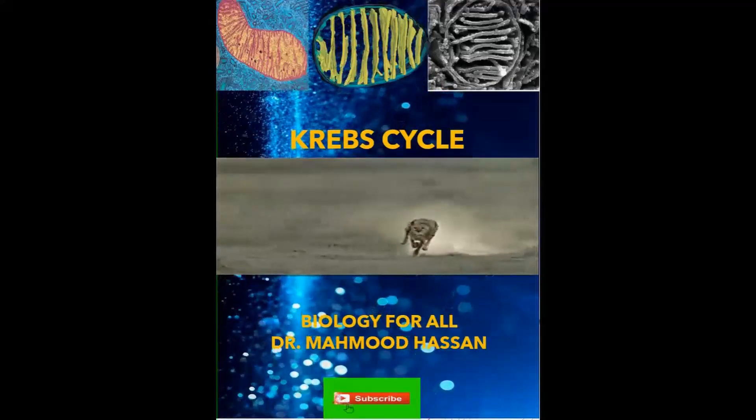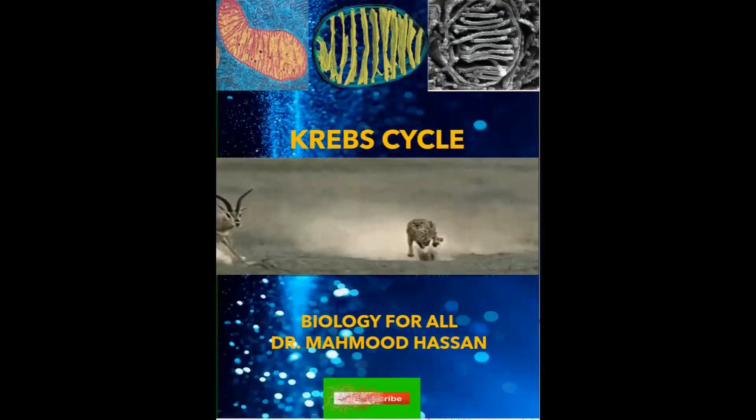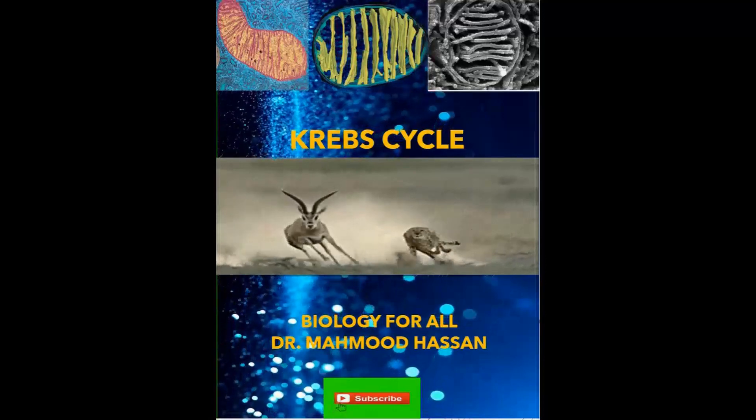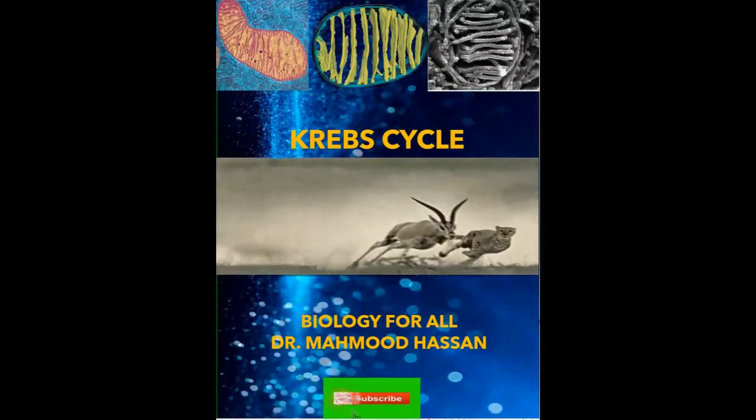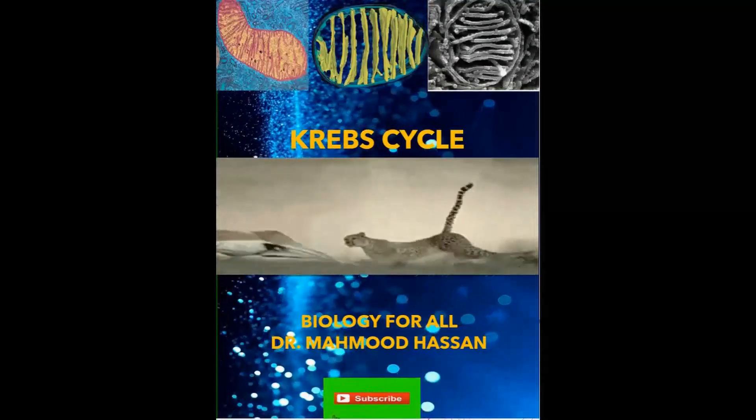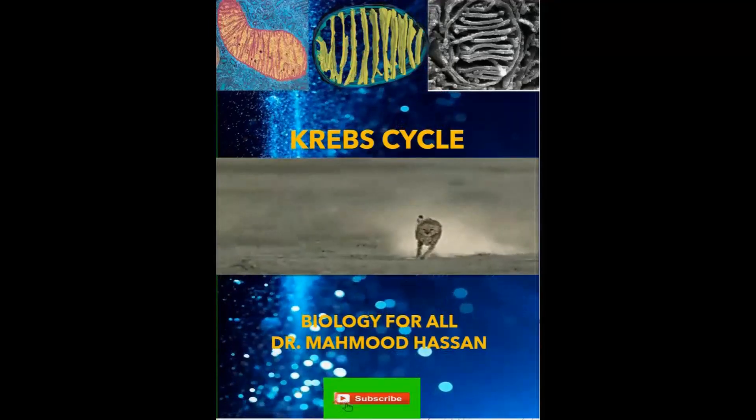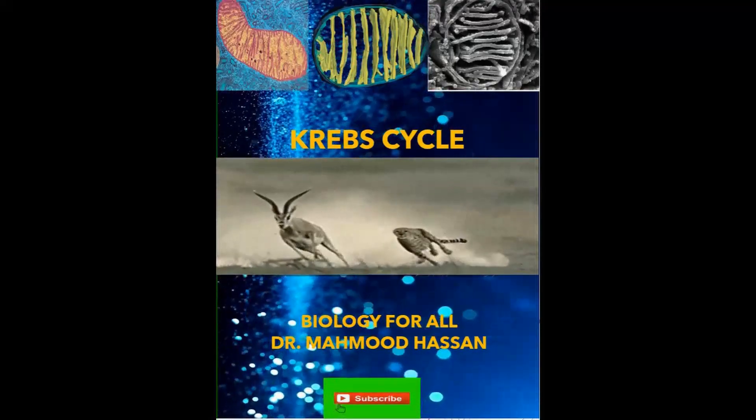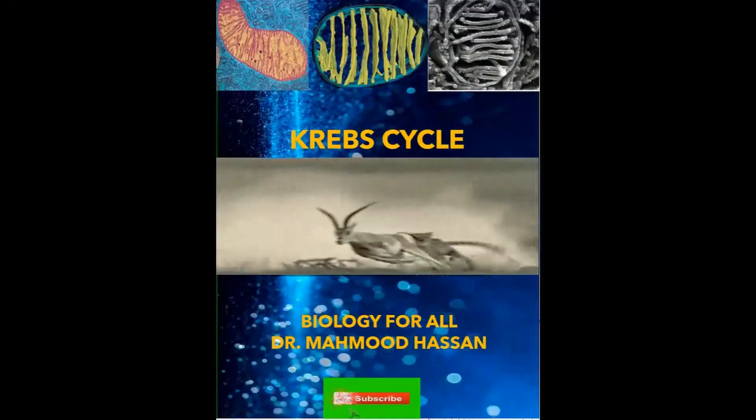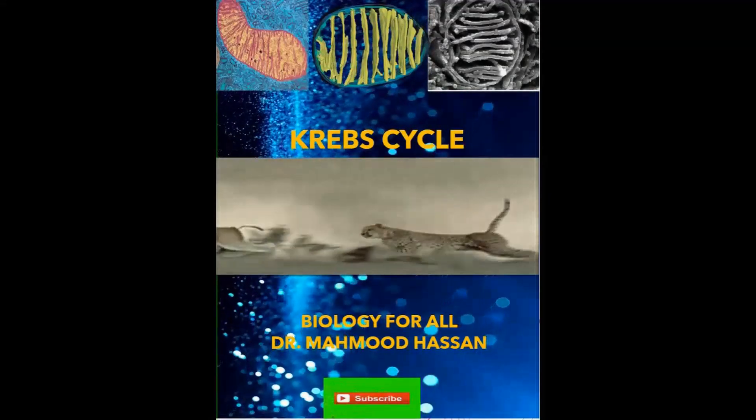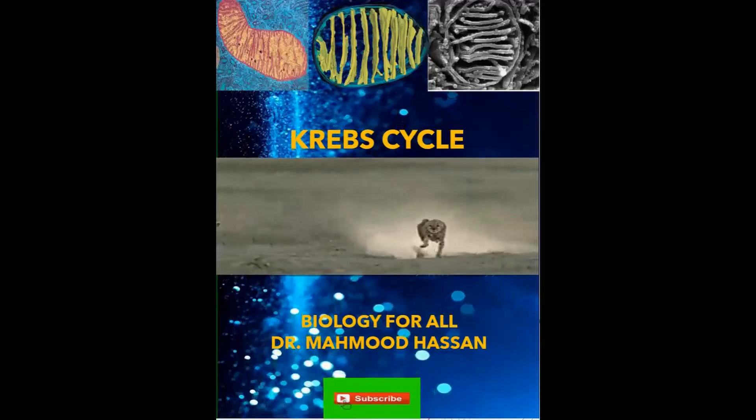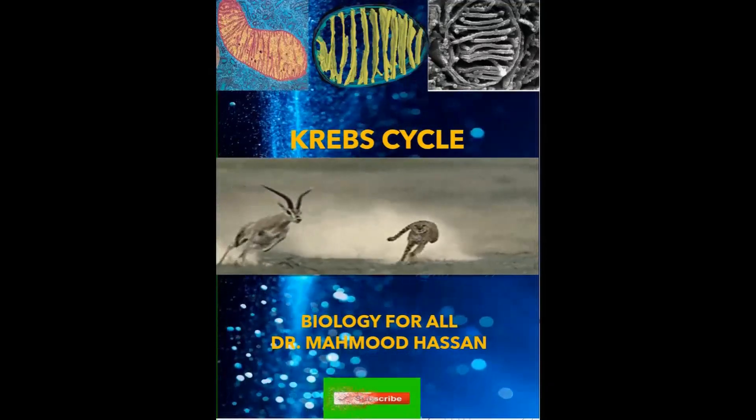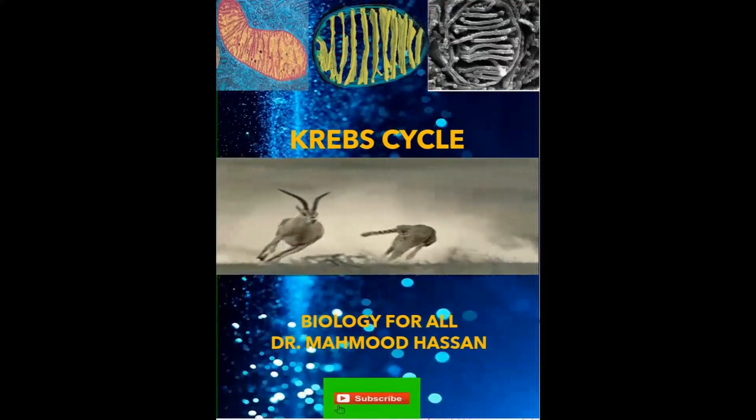The cristae contain a large amount of membrane surface which house the machinery needed for aerobic respiration and ATP formation. The organization of the cristae are shown in a clearer profile in the scanning electron micrograph of the top right of the slide and the three-dimensional reconstruction of the cross section of mitochondria in the middle.